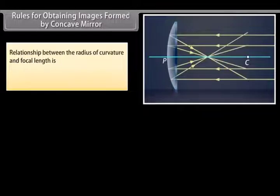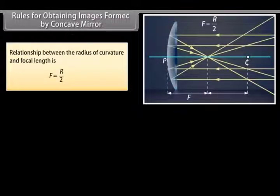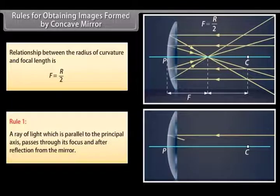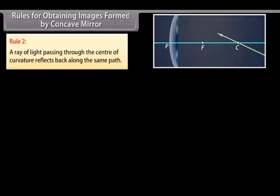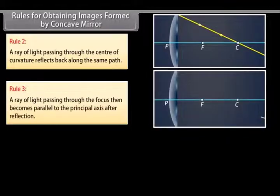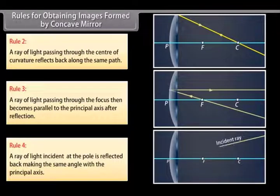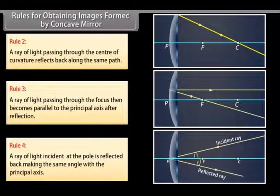Rules for obtaining images formed by concave mirrors: The relationship between radius of curvature and focal length is F = R/2. Rule 1: A ray of light parallel to the principal axis passes through its focus after reflection. Rule 2: A ray of light passing through the center of curvature reflects back along the same path. Rule 3: A ray passing through the focus becomes parallel to the principal axis after reflection. Rule 4: A ray incident at the pole is reflected back making the same angle with the principal axis.